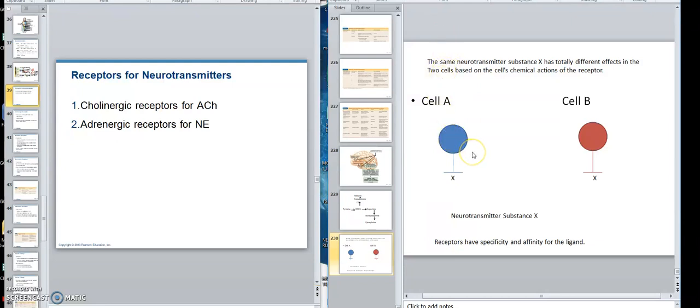However, when it comes to a neurotransmitter, the same neurotransmitter substance has totally different effects in two cells based on the cell's chemical actions of the receptor. So this cell and this cell both respond to the same substance. They have specificity and affinity. But it may turn this one on and turn that one off. So the receptors make as much difference as the neurotransmitters do. The same neurotransmitter on one cell can operate totally different on another cell.